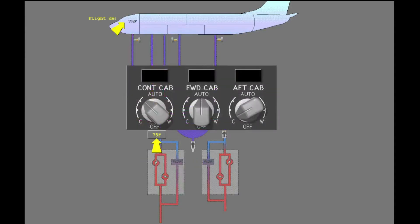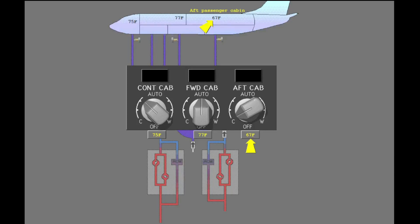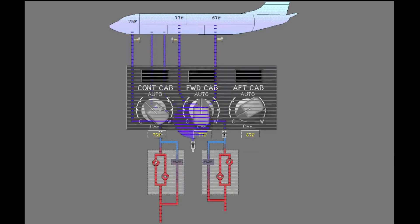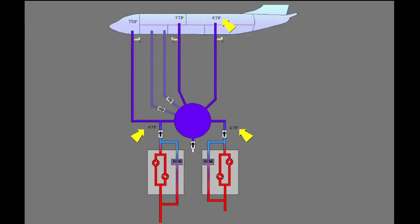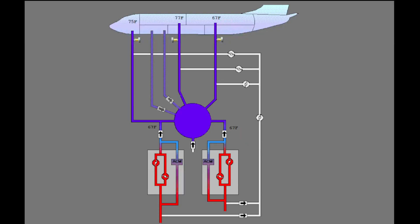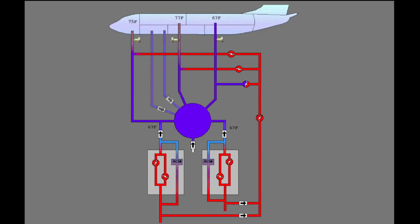You can control the temperature in three zones: the flight deck, the forward passenger cabin, and the aft passenger cabin. The two packs supply air at the temperature of the coldest requested temperature of the three zones. The trim air system uses warm bleed air from upstream of the air conditioning pack to warm the pack air to the necessary temperature for the related zones.